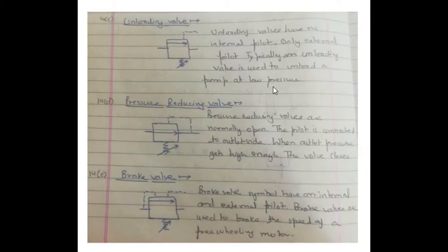14D pressure reducing valve. Pressure reducing valves are normally open. The pilot is connected to the outlet side of the port. When pressure, that is outlet pressure, gets high enough, the valve closes.